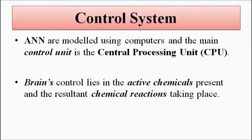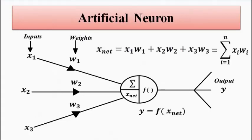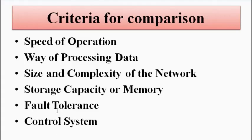We have drawn a comparison between the biological neuron and the artificial neuron in terms of various criteria. In some cases the artificial neuron is leading, and in some cases the human brain is leading. It is very difficult to say which one is more efficient — there is no clear-cut winner. Each has its own advantages and disadvantages. We cannot say the artificial neural network is superior to the human brain or vice versa — each has its own pros and cons. I hope you liked this video. Please subscribe to my channel Engineering Tutorial for more videos related to electrical, electronics, instrumentation, and communication engineering. Have a great day, thank you very much.